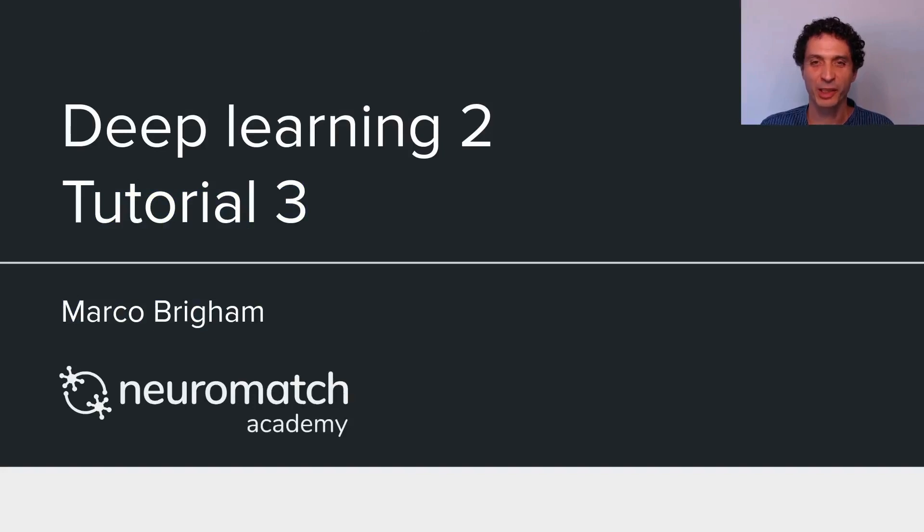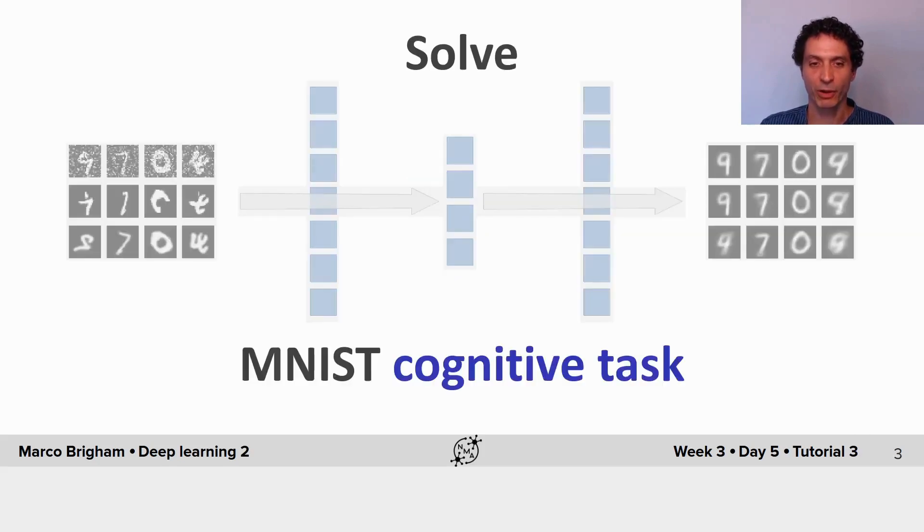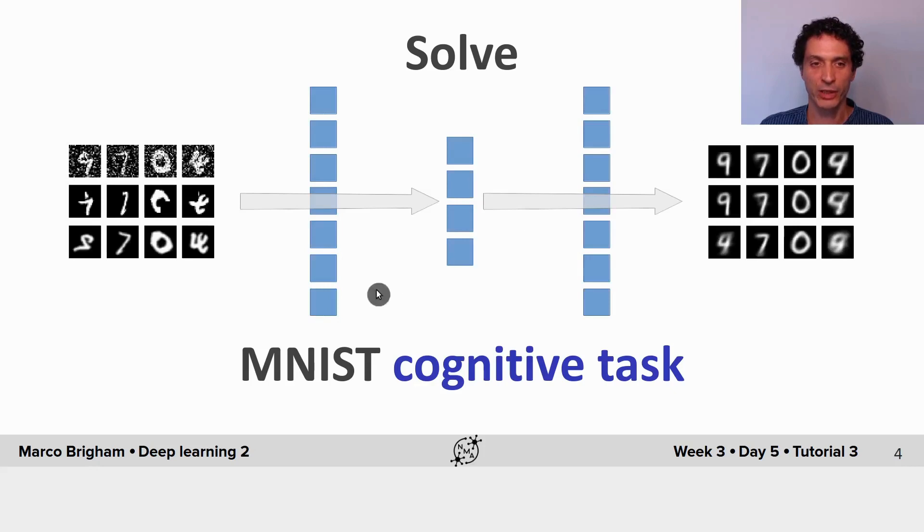Hi, this is Marco Brigham and welcome to the third tutorial of Deep Learning 2. Now that you know more about autoencoders and know how to build powerful models, let's put them to use in solving the MNIST recognition task. We'll give the autoencoder the transformed images and ask to recover the original images.